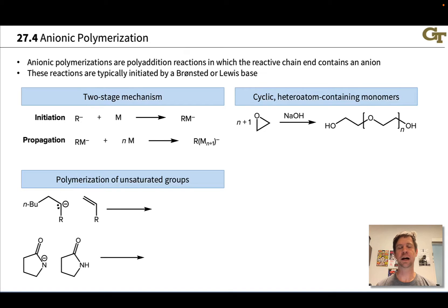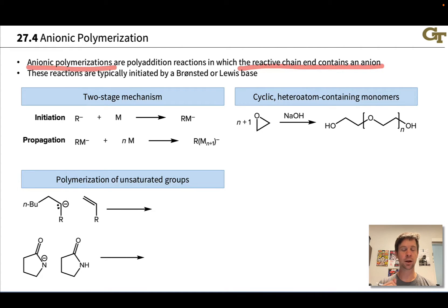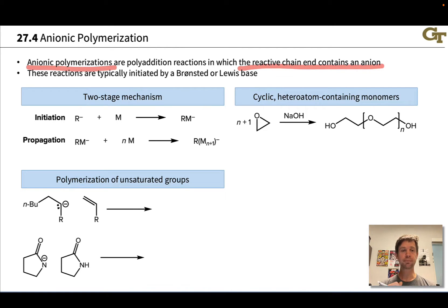Anionic polymerization is a kind of addition polymerization where the reactive chain end contains an anion. Like cationic polymerization, there's a two-stage mechanism involving an initiator reacting first, followed by chain lengthening or propagation. The initiator is typically a Brønsted or Lewis base, and reaction with a monomer molecule creates an anion RM- in the initiation stage. That anion can then react with neutral monomer molecules repeatedly to lengthen the chain, and we always have a negative charge on the chain end.